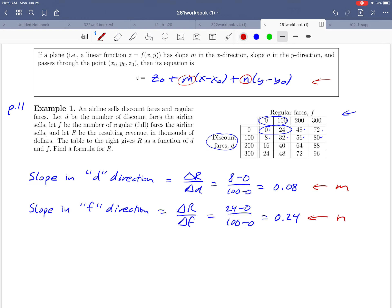We already made the observation that the slope is constant in the D direction and constant in the F direction. That's how we know that this is a linear function. So remember what we're after here is a formula for R, and the formula that we're going to use to find it is sitting up here. We found the two slopes, the M and the N that are circled. What's the other piece of information that we need? In addition to the slopes, we also need a point.